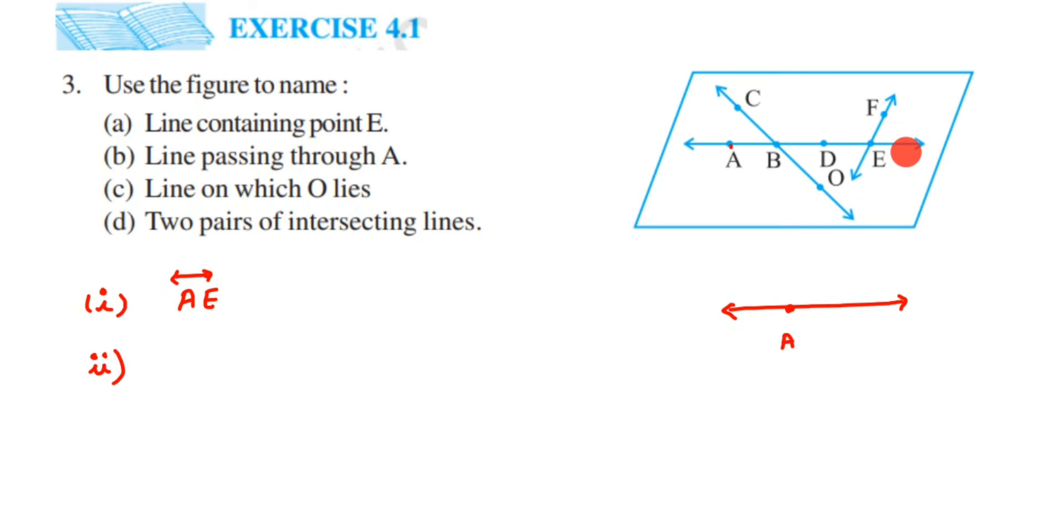You can also write the name as BE or DE because B and D are all points of this line, and this line is passing through point A. So you can write down line AE, or you can write down line BE or DE - completely up to you. So I'm going to write it as AE. If you want, you can write down BE. There are many answers possible for this question.